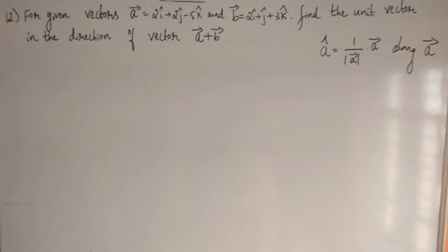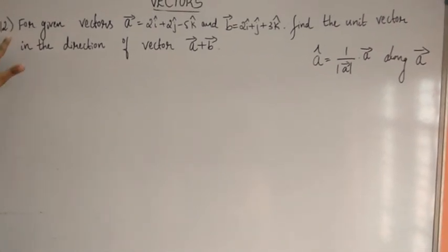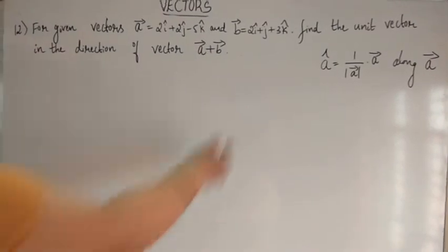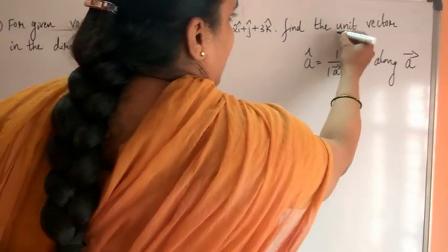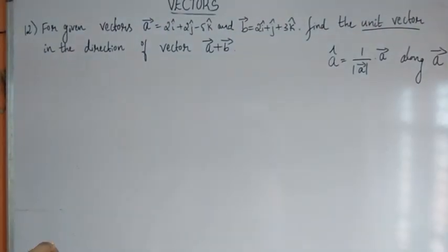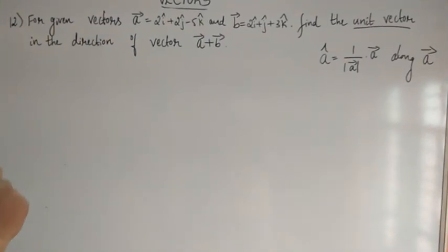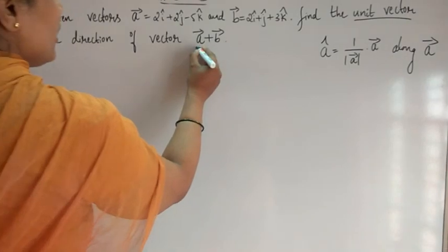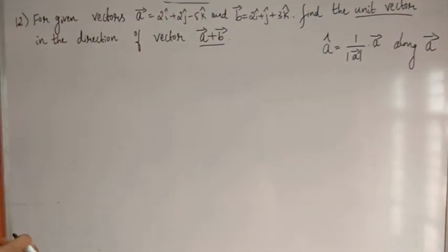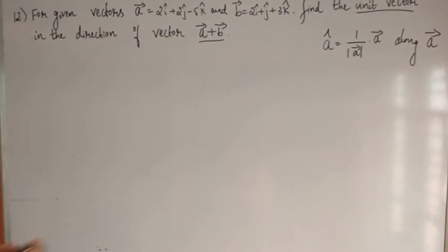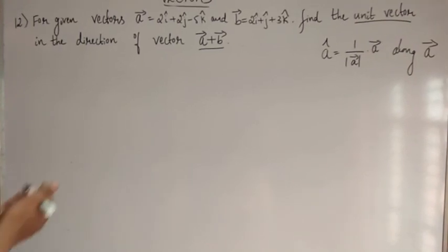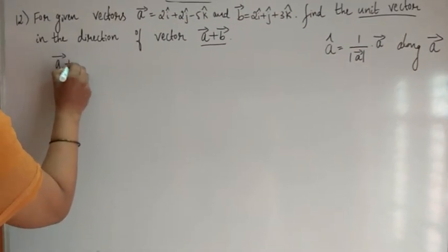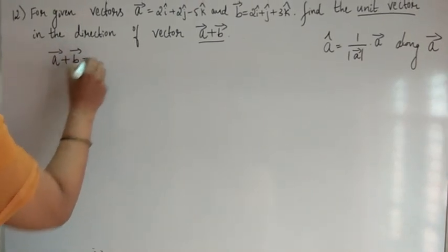Next problem — same as previous. For given vectors A and B, find the unit vector in the direction of vector A plus vector B. We solve using the same method. First find vector A plus vector B: 2i-cap plus 2i-cap is 4i-cap; 2j-cap plus 1j-cap is 3j-cap; minus 5k-cap plus 3k-cap is minus 2k-cap. So vector A plus vector B equals 4i-cap plus 3j-cap minus 2k-cap.